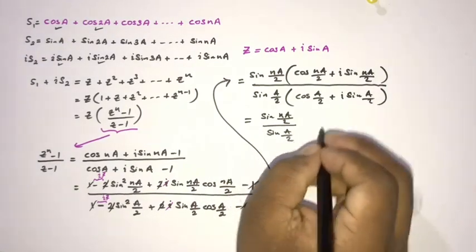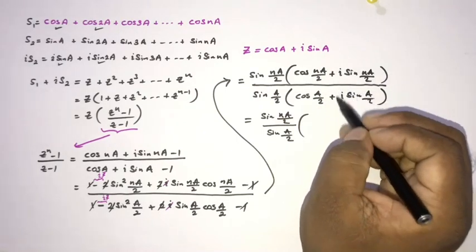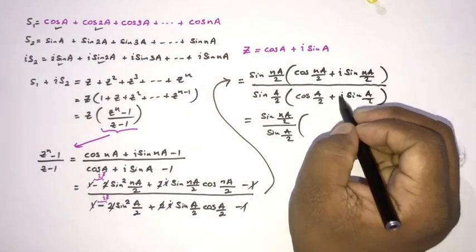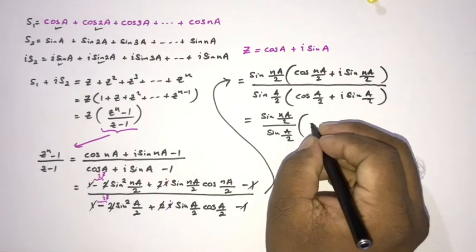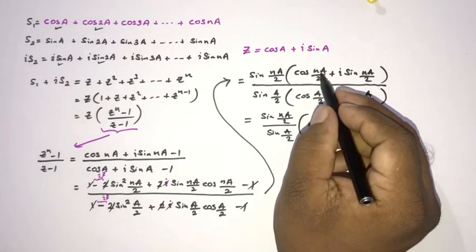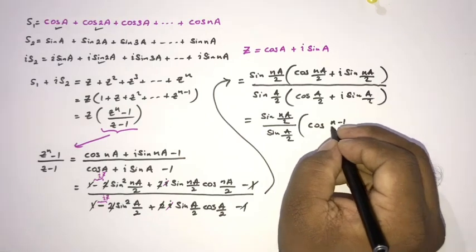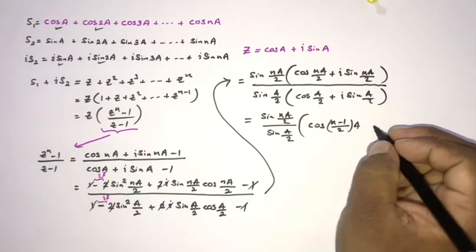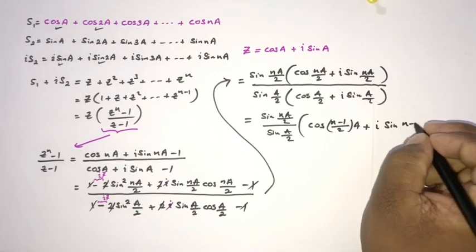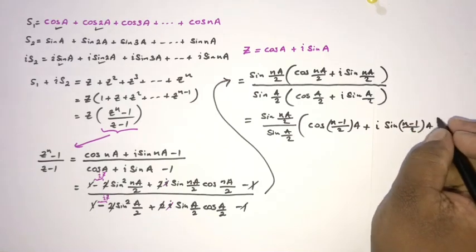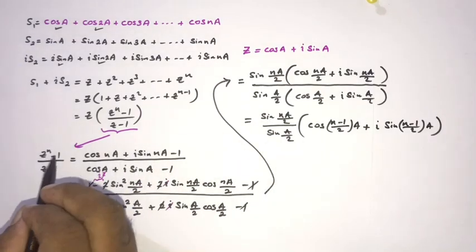We can simplify by dividing these complex numbers using De Moivre's theorem. Dividing the complex numbers, we get cos((n-1)a/2) + i·sin((n-1)a/2). So (c^n - 1)/(c - 1) equals sin(na/2)/sin(a/2) · [cos((n-1)a/2) + i·sin((n-1)a/2)].